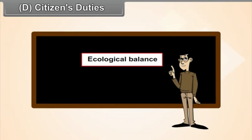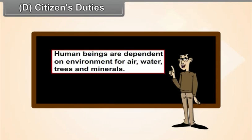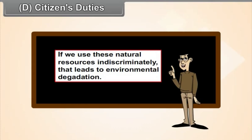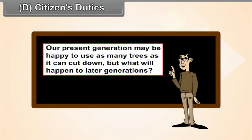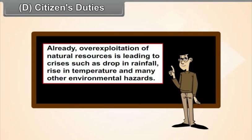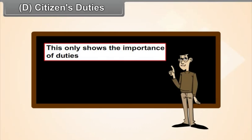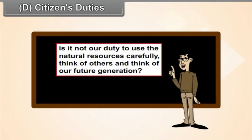Ecological balance: human beings are dependent on the environment for air, water, trees, and minerals. If we use these natural resources indiscriminately, that leads to environmental degradation. The present generation may be happy to use as many trees as it can cut down, but what will happen to later generations? Already, over-exploitation of natural resources is leading to crises such as drop in rainfall, rise in temperature, and many other environmental hazards.